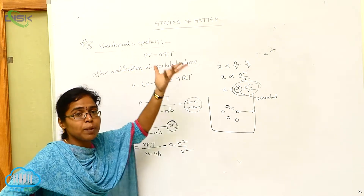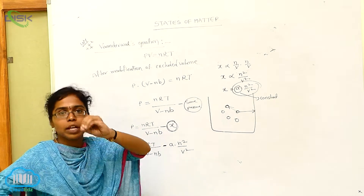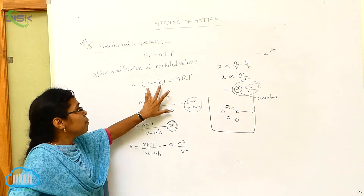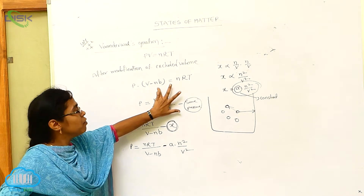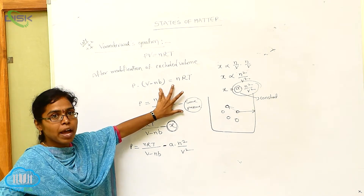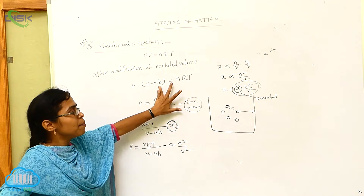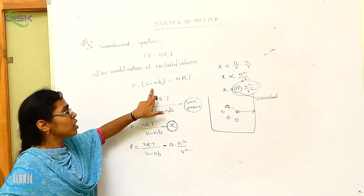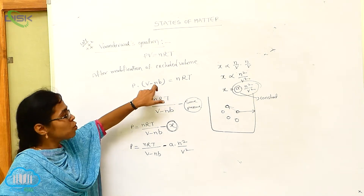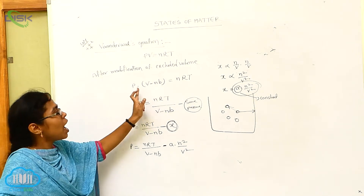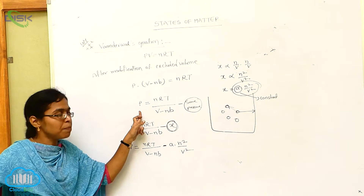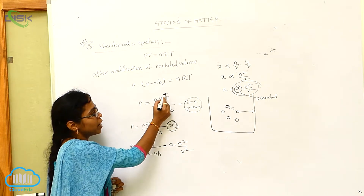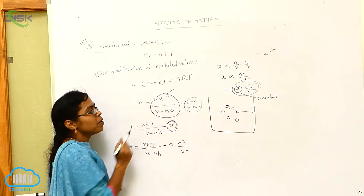Whenever modifying in the place of pressure and the place of volume — first he modified the volume. That modified volume is nothing but the excluded volume B. B is a constant. Already I explained how we arrive at V minus NB. Based upon V minus NB, we do the modification of the pressure. Normally the pressure exerted in the container is NRT by V minus NB.